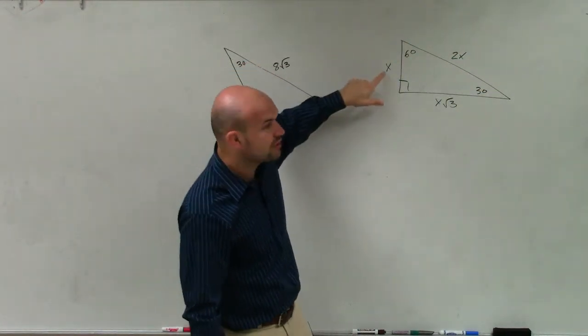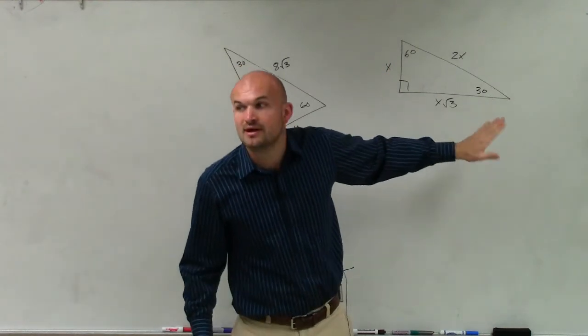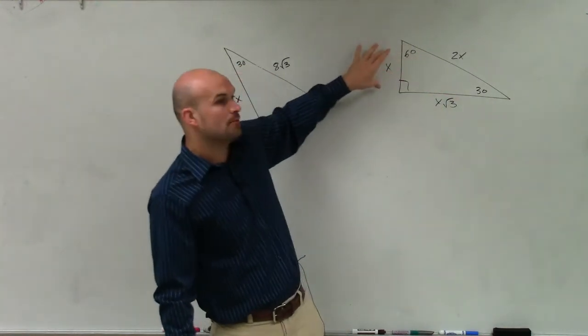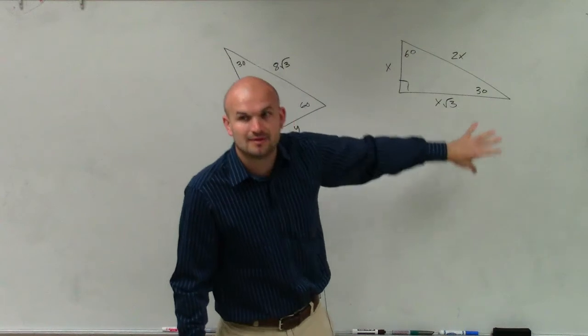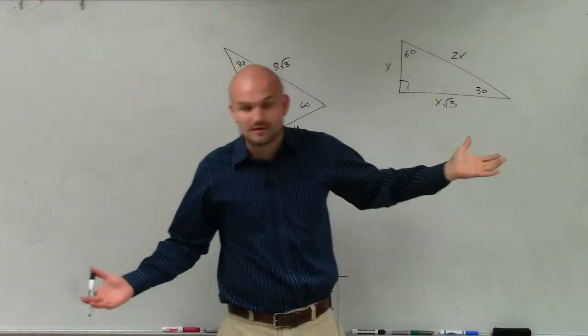To go from the short leg to the long leg, I multiply by square root of 3. But if I was provided this and I wanted to go back to the short leg, I would have to divide by square root of 3.